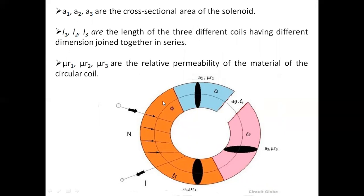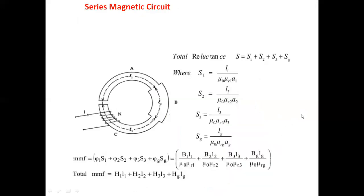Where A1, A2, A3 are the cross-sectional areas of the different parts, L1, L2, L3 are the lengths of the three parts joined in series, and μR1, μR2, μR3 are the relative permeabilities. When considering a series magnetic circuit, we always compare it with an equivalent electrical diagram — which is simply three resistances R1, R2, R3 connected in series with a potential source, just like the equivalent electrical circuit.